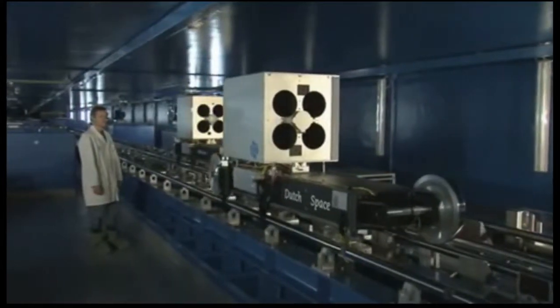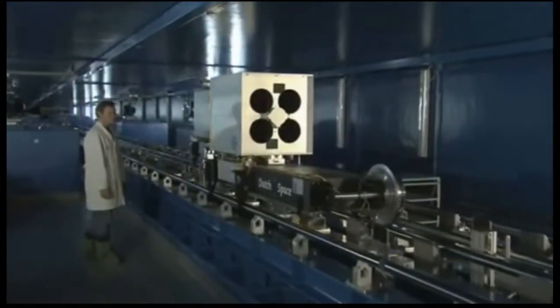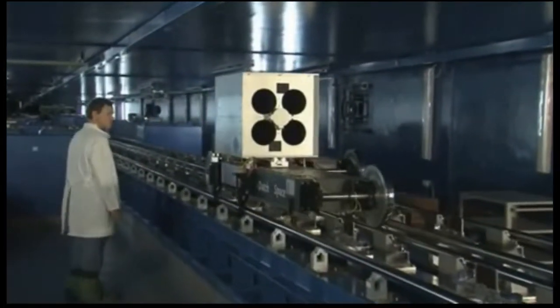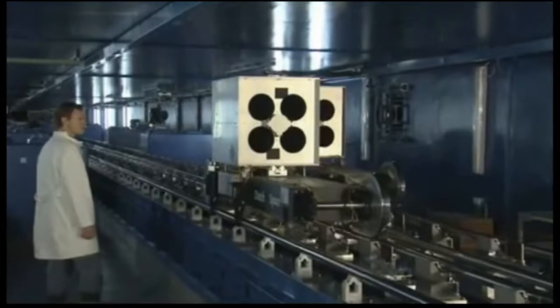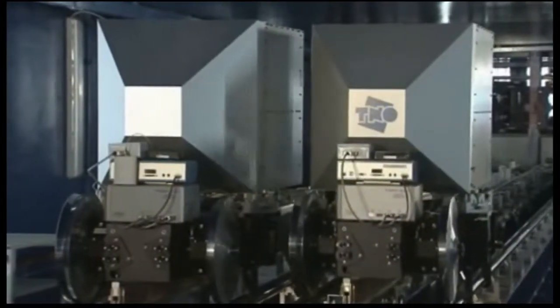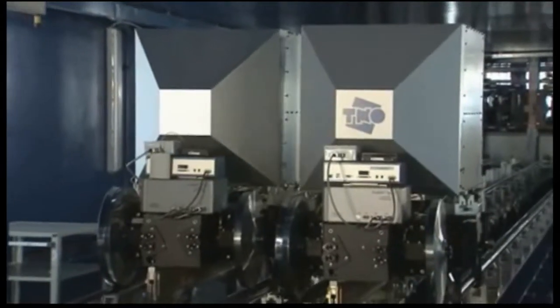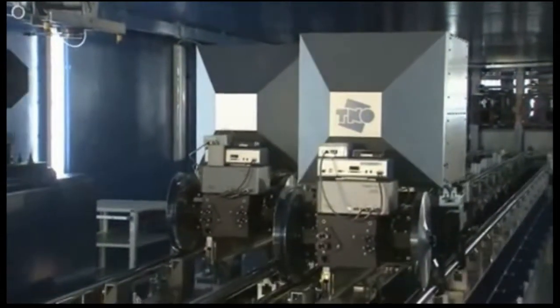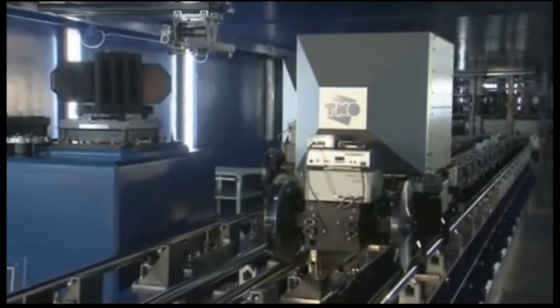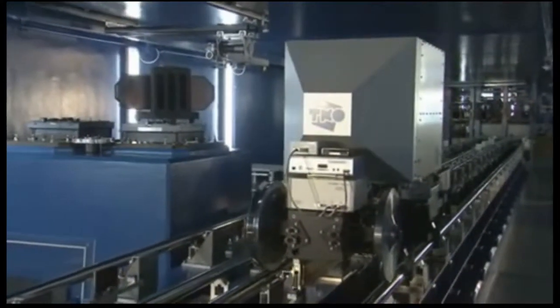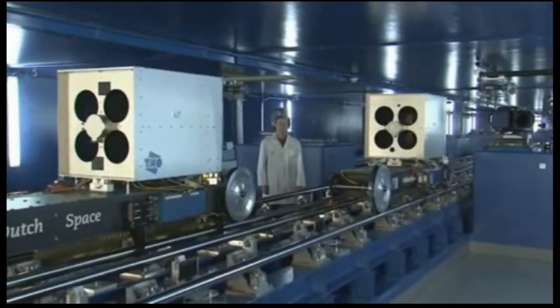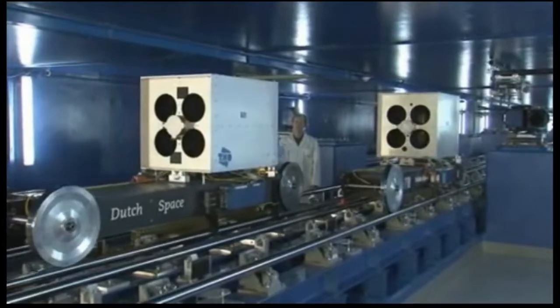Delay lines are an integral part of the VLT interferometer's complicated optical system. They ensure that the light beams arrive simultaneously at the common focus. To achieve this, several movable carriages loaded with ultra-smooth mirrors constantly adjust the light beams with extreme precision. The light paths must be kept equal to distances less than 1,000th of a millimeter over a distance of 100 meters. Without this kind of accuracy, the light cannot be analyzed properly by the observatory's instruments.